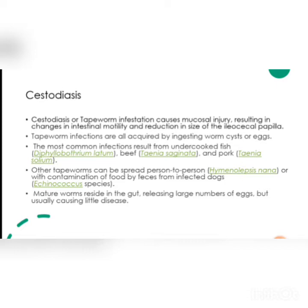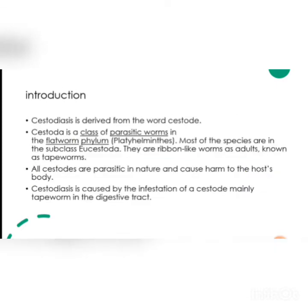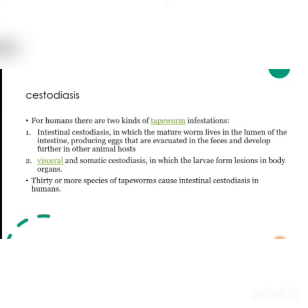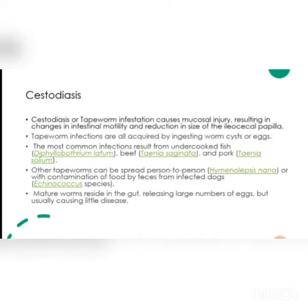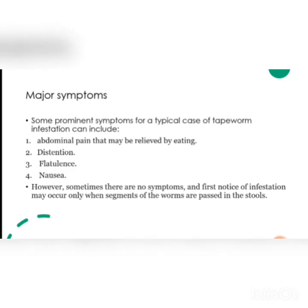A large number of these worms reside in the gut, where they release a large number of eggs. Although these eggs cannot cause harmful effects directly to us, when they pass through our feces they can cause serious damage to other animals and the environment. In humans there are two kinds of Cestodiasis: intestinal Cestodiasis, and visceral and somatic Cestodiasis.